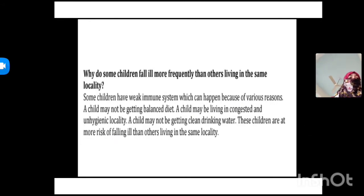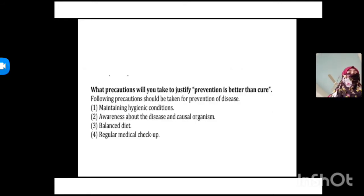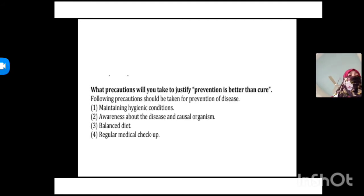The next recap question was: why do some children fall ill more frequently than others living in the same locality? We provided three to four reasons, including that they may have a weak immune system, and we explained the reasons behind that. Then we covered precautions to justify the principle that prevention is better than cure, providing four precautions.